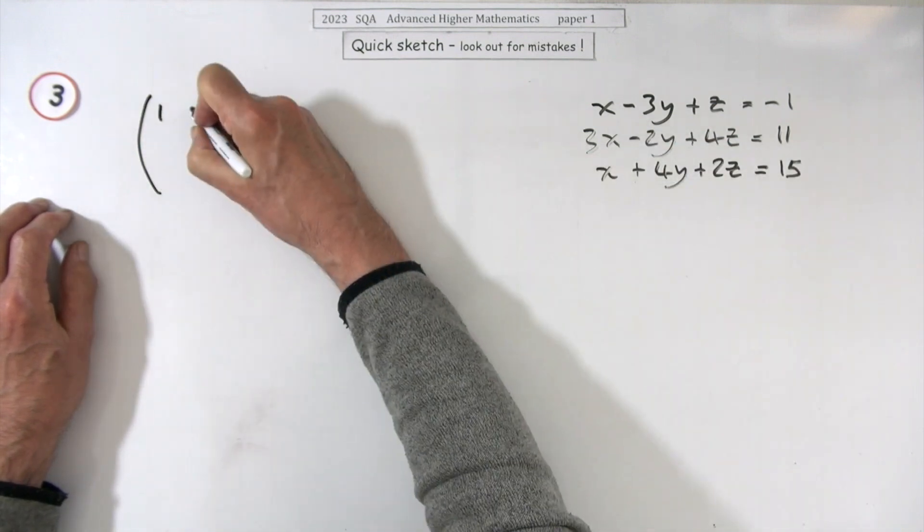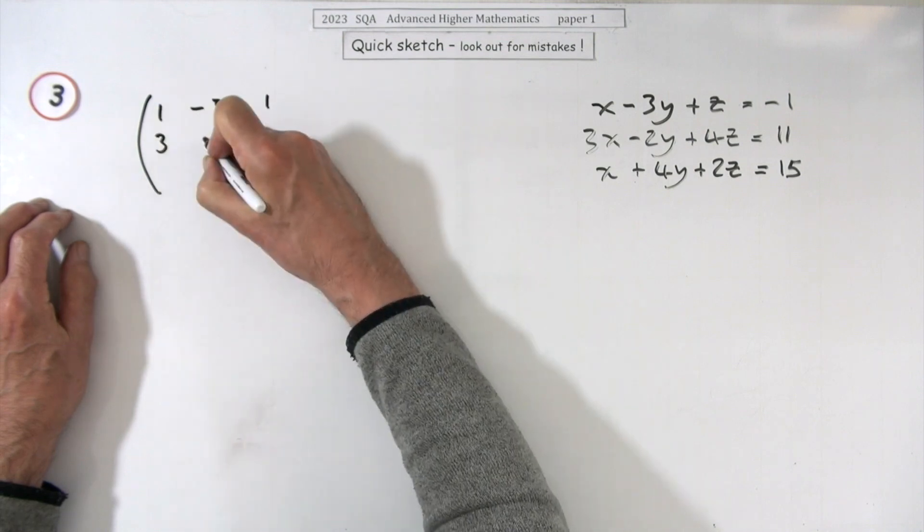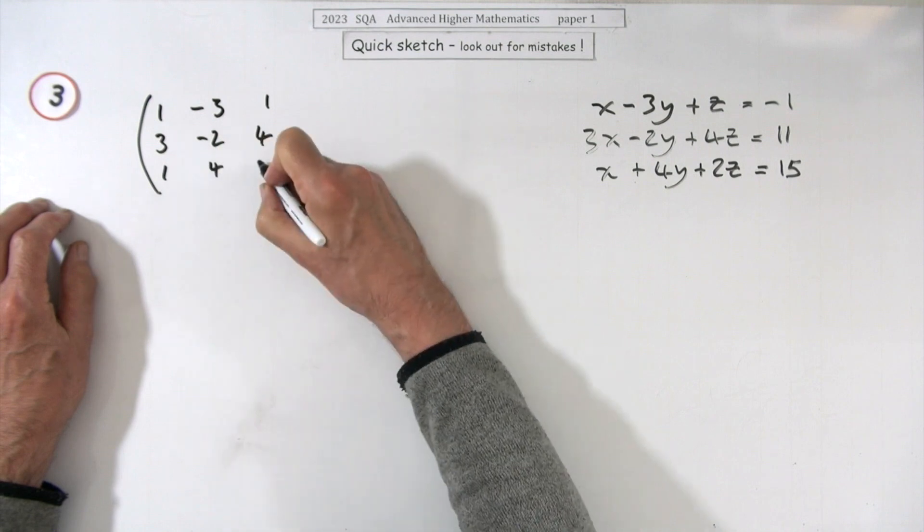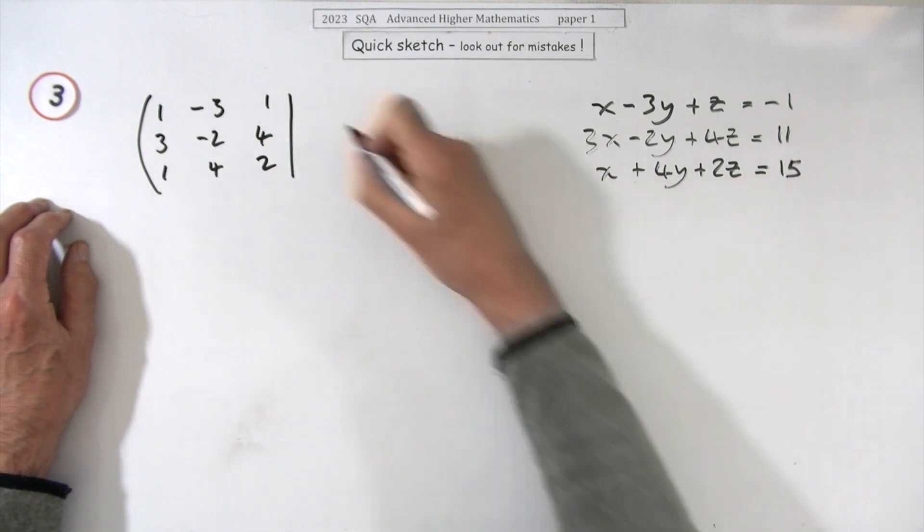the matrix of coefficients here: negative three, one, three; negative two, four, one; four, two. Then augment it with the